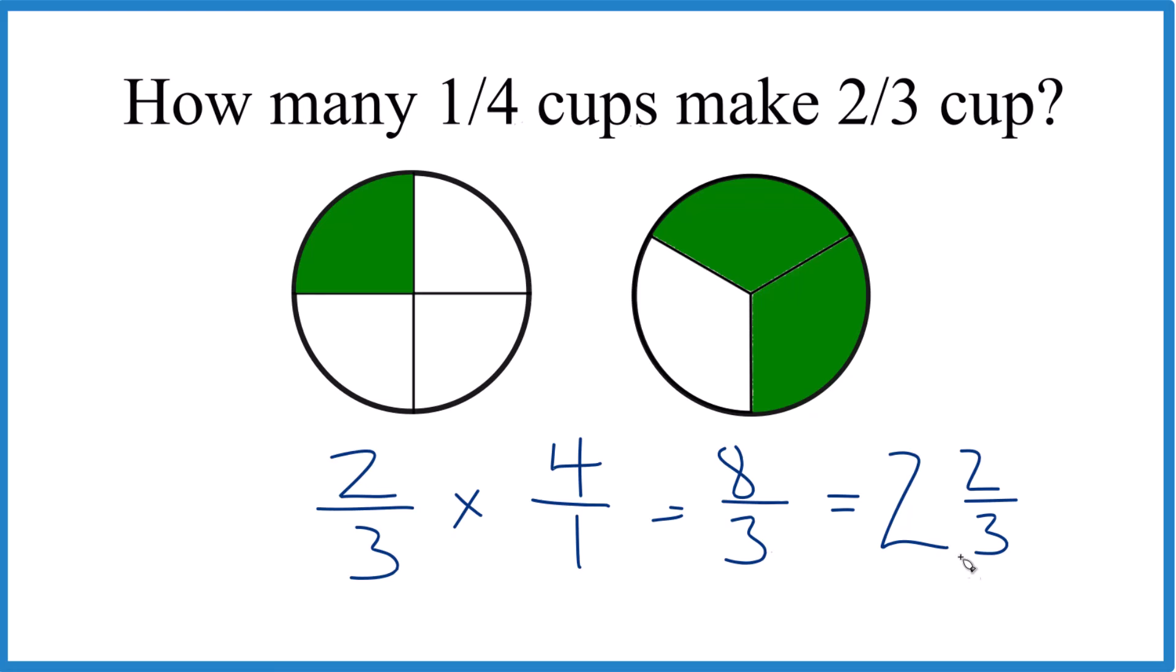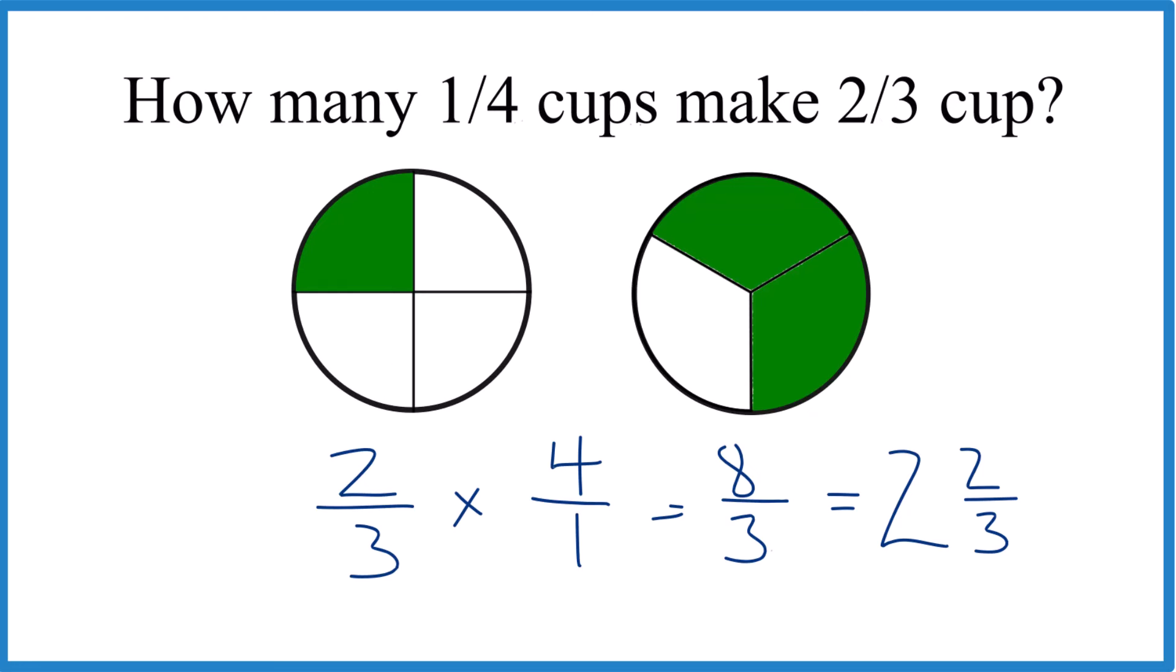And we bring the three across. So it takes two and two-thirds of a one-fourth cup to make two-thirds cup, which is kind of crazy. My guess is this is more something that shows up on a quiz or a test for students, so this is probably the best way for you to do it here.